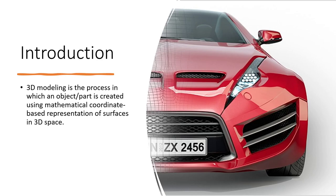So, introduction: what is geometric modeling? We've been doing it quite a while. The definition is that 3D modeling is the process in which an object or part is created using a mathematical coordinate-based representation of surfaces in 3D space. How are we going to represent this model or solid object? It's going to be some mathematical coordinate.